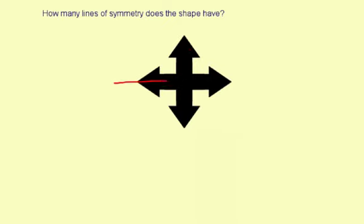For example, if I draw a line right through here, notice how the shape looks like it's half reflected onto the other half. So that's a line of symmetry.